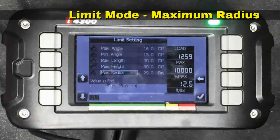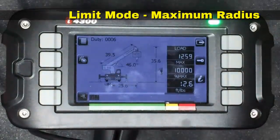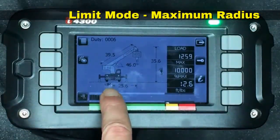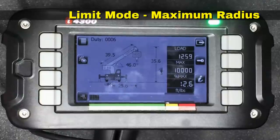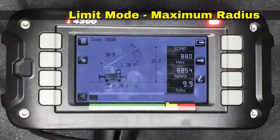I've turned on the maximum radius and it's currently set for 29 feet. Back on the main screen we see a limit indication next to the radius, indicating that a limit has been turned on. I'm going to increase the radius by altering the boom angle. The radius has now been exceeded, and the arrow pointing toward the right against a flat bar indicates that we have exceeded the maximum radius that we have set.